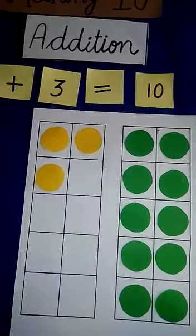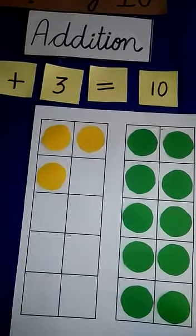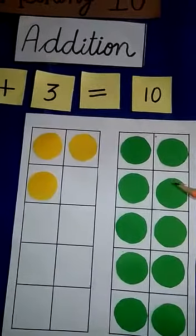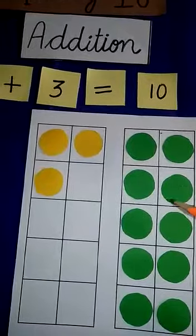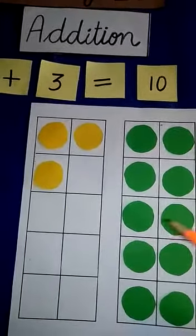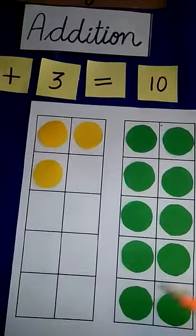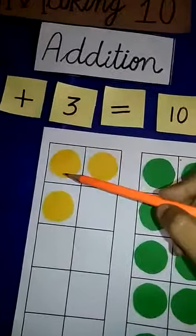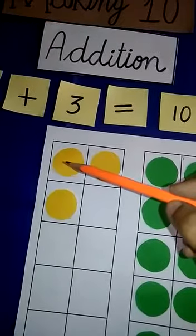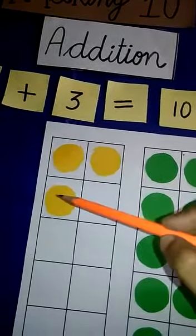We fill this column with circles. In the first column, we fill 10 circles. Let's count: one, two, three, four, five, six, seven, eight, nine, ten. And in the other column, we fill three circles: one, two, three.